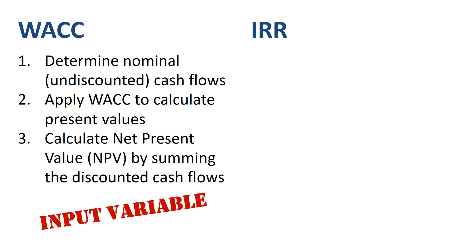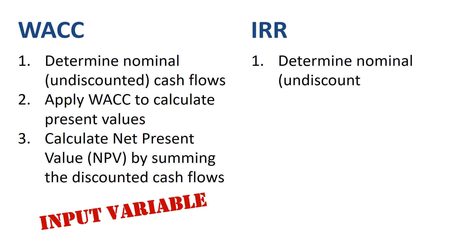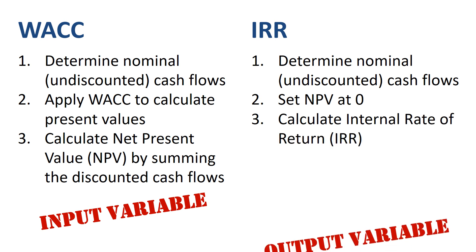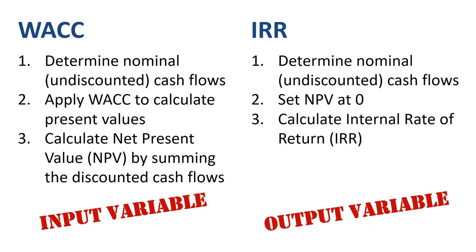With IRR the sequence is different. You start off quantifying the nominal cash flows over the years for your project. You set the net present value in the formula at zero. You can then calculate IRR, which is the output variable or dependent variable.